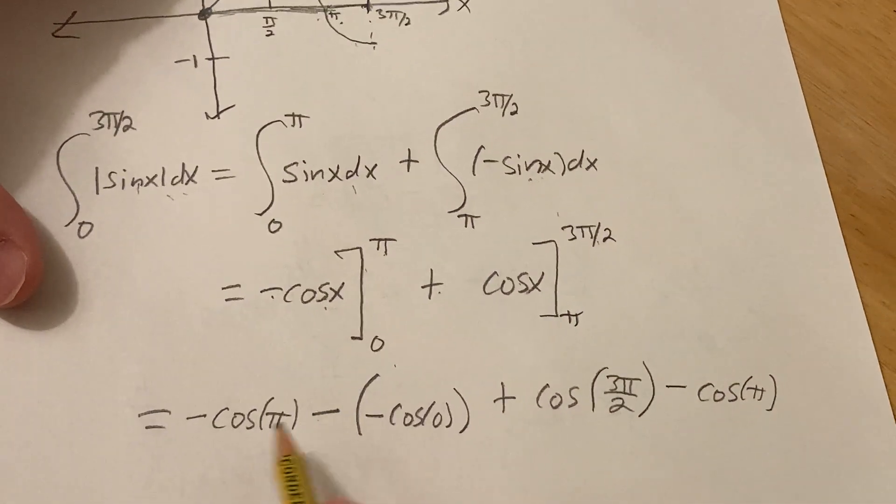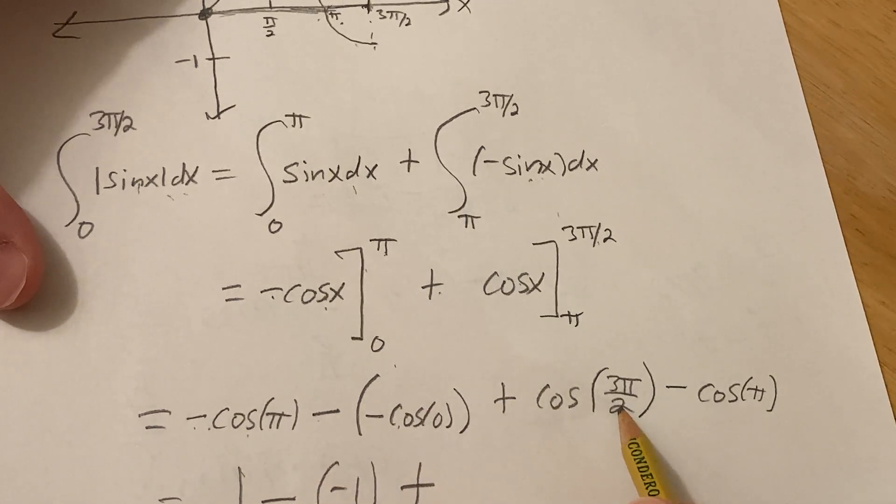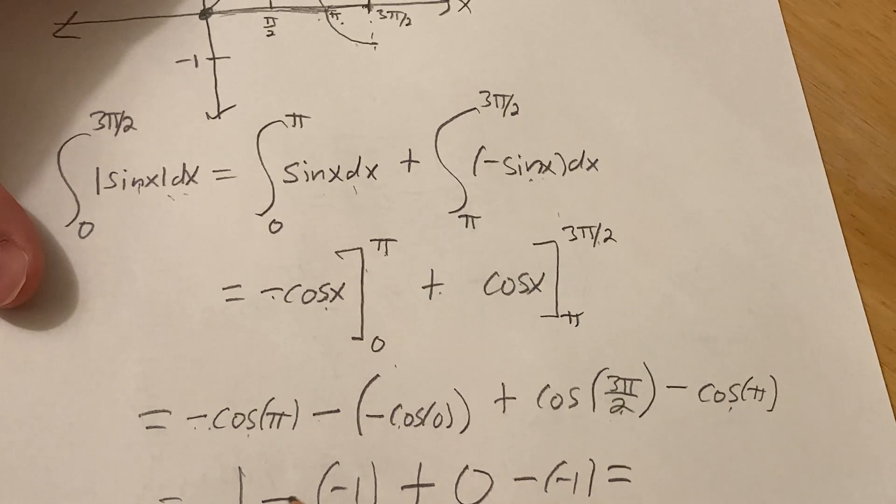And so now let's see what happens here. Cosine of pi is negative 1. So it's negative negative 1. So it's 1 minus. And then cosine of 0 is 1. So it's minus negative 1. Plus, cosine of 3 pi over 2 is 0. Cosine of pi is negative 1. So this is going to be 1 plus 1 plus 1. So it's 3. And that's the answer.